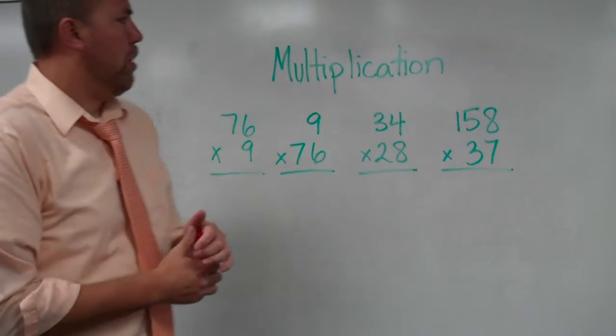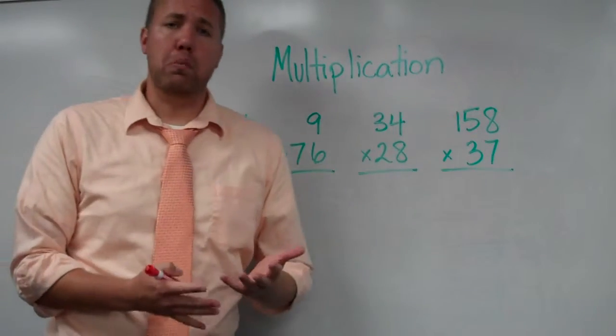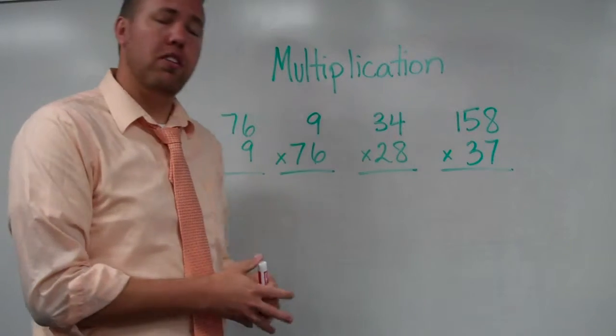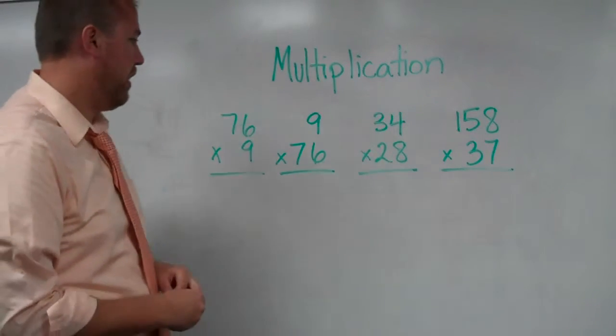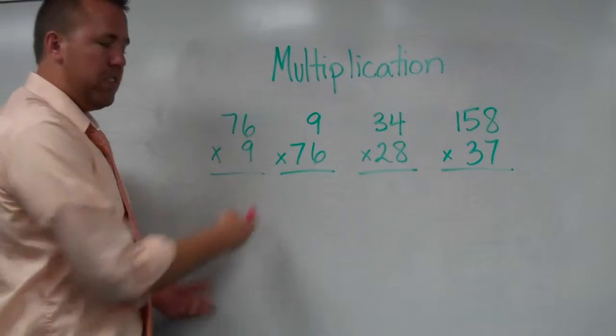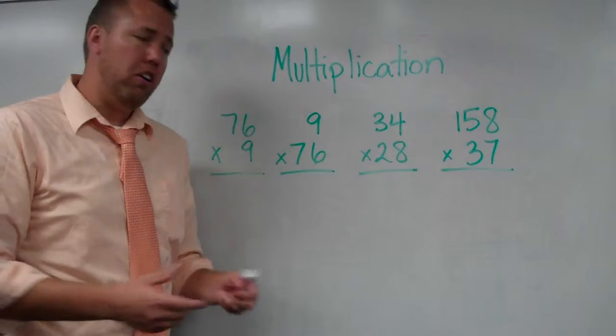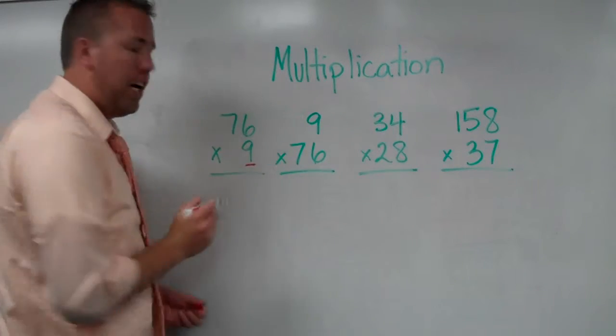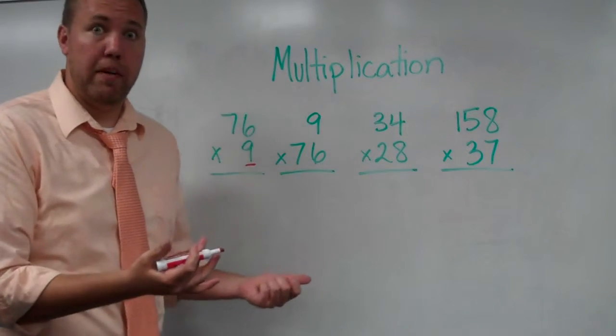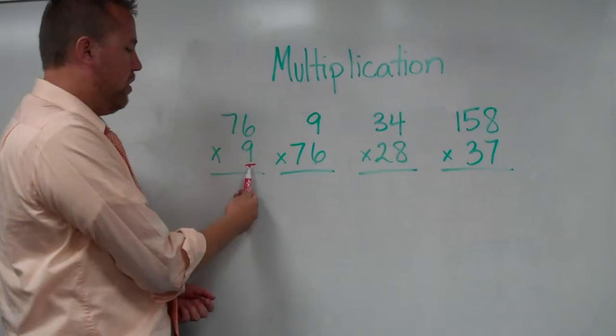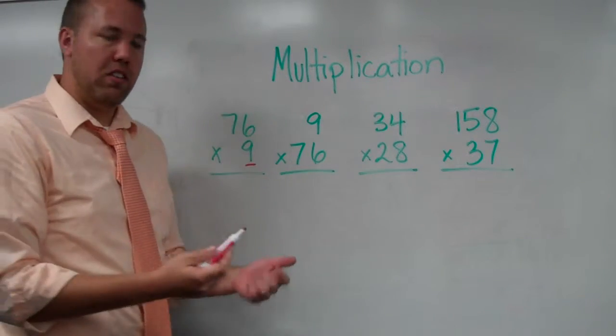So we'll be looking over just basic multiplication, the steps that you can follow each and every time. First off, I want to start just 76 times 9. Every time when we're starting following this algorithm, we're going to start right in the bottom right. Every time, it's just how we do it. Then we just multiply by the ones column.